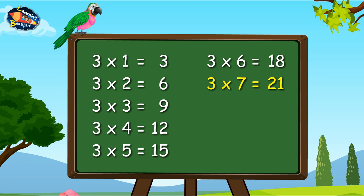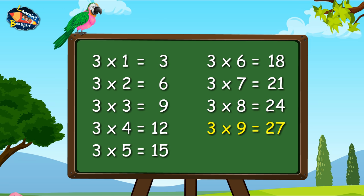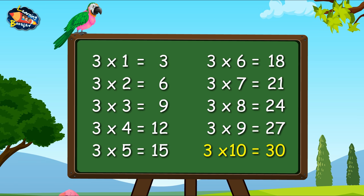Three sevens are twenty-one. Three eights are twenty-four. Three nines are twenty-seven. Three tens are thirty.